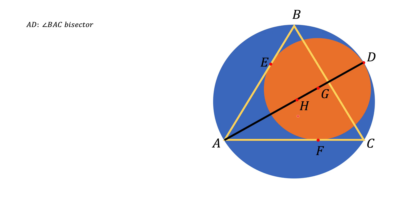Since the center of the large circle, point H, is on segment AD, segment AD is a diameter of the large circle. So if we denote the radius of the large circle as R, then AD equals 2R.